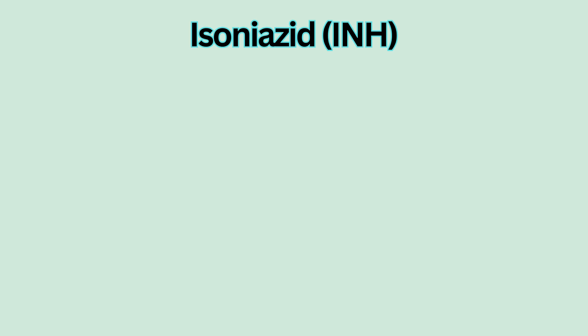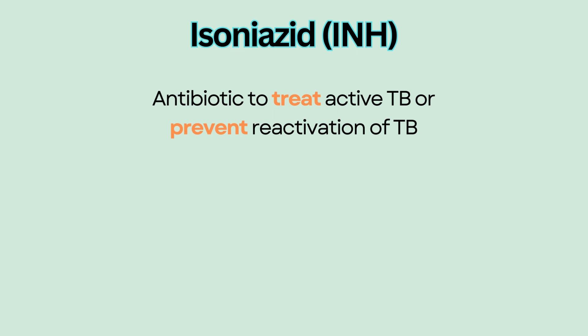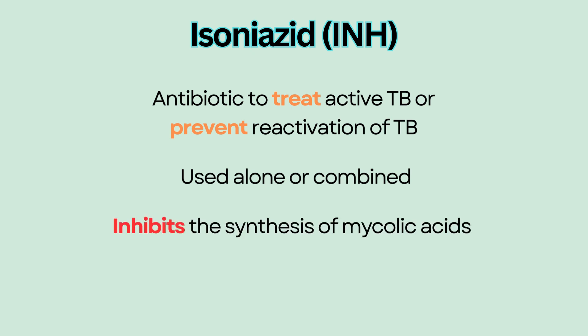Isoniazid, or INH, is an antibiotic used to treat tuberculosis or prevent its reactivation. It can be used alone or combined with other anti-tubercular medications. It inhibits the synthesis of mycolic acids, which is a fatty acid essential for survival of mycobacterium.